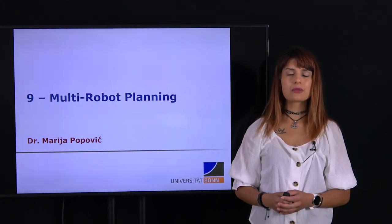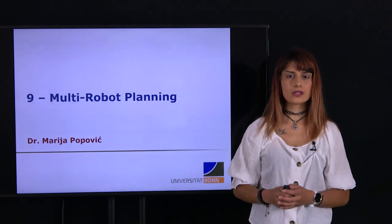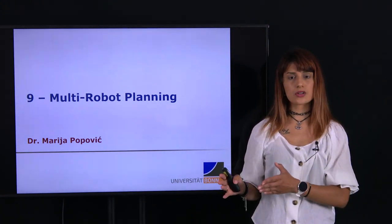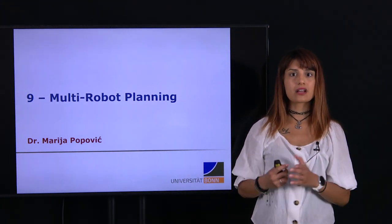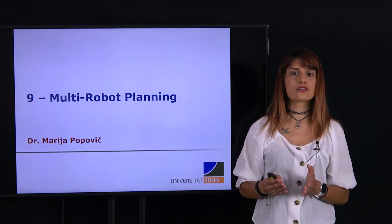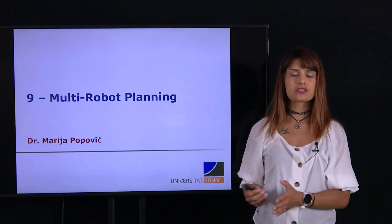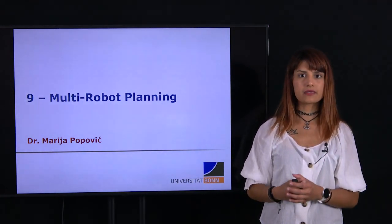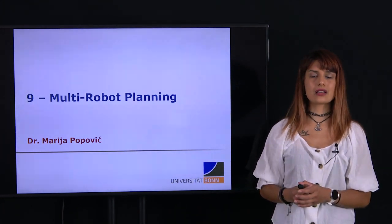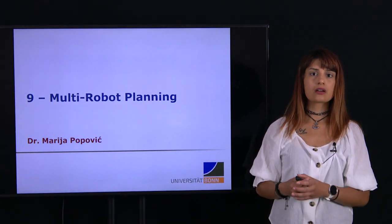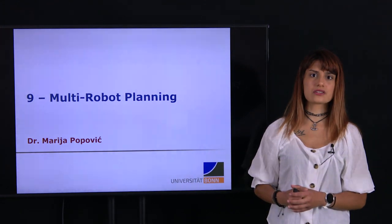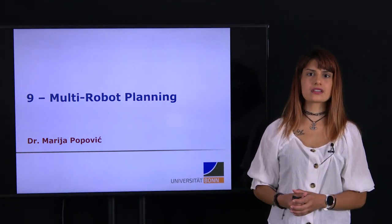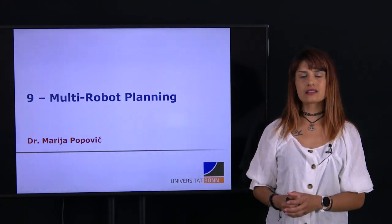In this final lecture we're going to look at problems of multi-robot planning and decision making. We're going to take what we have learned in previous lectures and extend it to applications where we have multiple robots or multiple agents operating in the same environment and sharing the workspace. We start by looking at what a multi-robot system is, different flavors of multi-robot planning and decision-making problems, and based on this develop some general approaches to solving these tasks.